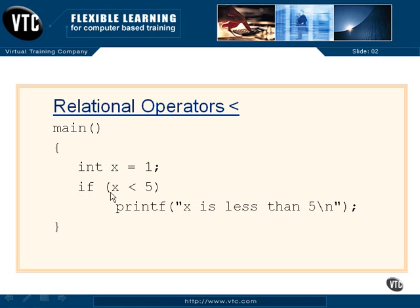Now we say if x is less than 5, just for a piece of work to do, we will print that x is less than 5 in a new line. So that's our relational operator, less than.